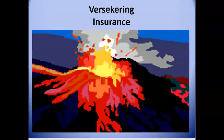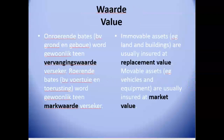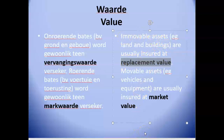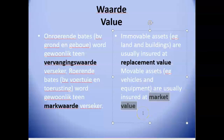If non-current assets are damaged leading to an insurance claim, the averaging clause applies: insured amount divided by the value of the asset, multiplied by the value of the loss. Immovable assets such as property, plant and equipment are usually insured at replacement value, while movable assets like vehicles and equipment are insured at market value — what it would cost to replace them in the marketplace.